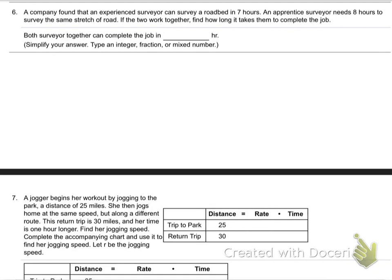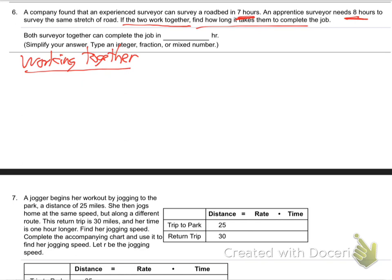Here on number 6. A company found that an experienced surveyor can survey a roadbed in 7 hours, and an apprentice surveyor needs 8 hours to survey the same stretch of road. If the two work together, how long will it take them? This is the second type of word problem — I call it working together. They give you each person's time alone and ask how long together. The formula is always: 1 over person A plus 1 over person B equals 1 over the together time.